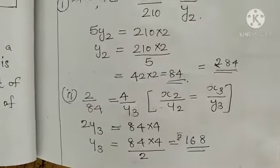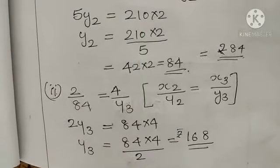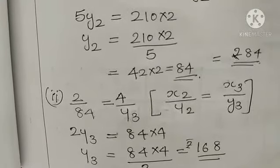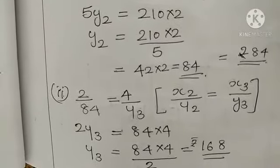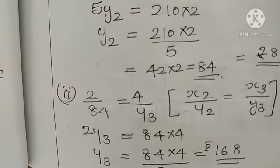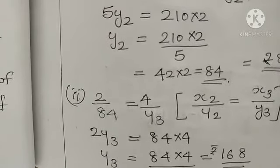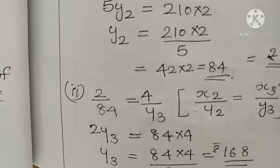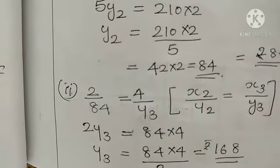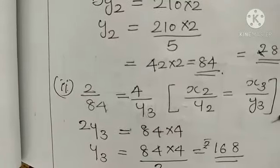Now we got x2 and y2. Either you can relate these x2, y2 to calculate x3 and y3, or you can use the same x1 and y1 to calculate x3 and y3. Here we can use 2 by 84 is equal to 4 by y3. Better to use the first quantities if it is known because the smaller number will be the first column. So here 2 by 84 is equal to 4 by y3. Cross multiplication, y3 is equal to rupees 168.